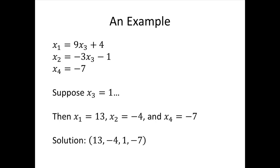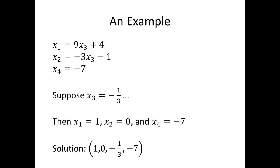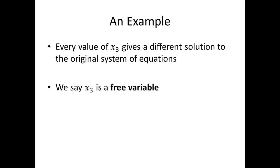But that was just an arbitrary value of x3 that we chose. If we set x3 equal to 2, we get the solution (22, −7, 2, −7). The numbers we plug in for x3 don't have to be whole numbers or even positive — we could plug in x3 equal to negative one-third, and that gives us another solution: (1, 0, −1/3, −7). In fact, any value of x3 gives us a solution to the original system. So we say that x3 is a free variable — it's free to be whatever we want, and whatever we plug in gives another solution.